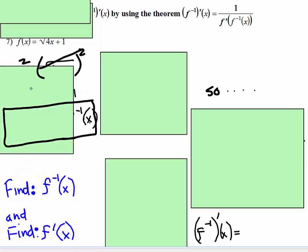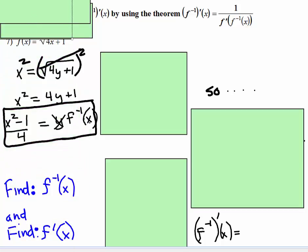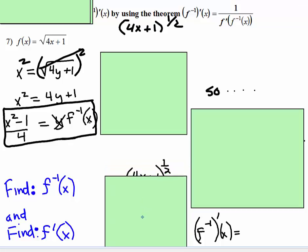Okay. And remember we need to find the inverse, which is what we just did, and we need to find the derivative. Well, to find the derivative, rewriting that as 4x plus 1 to the 1 half would be helpful. So that's what we're going to do. You bring the 1 half down in front, and then you subtract 1, or subtract 2 over 2, and you bring the 1 half down here. Then you're going to multiply that whole thing by the derivative of the inside.